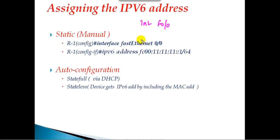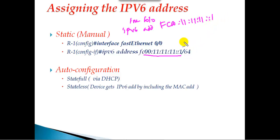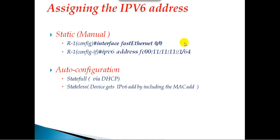To assign the IPv6 address, we go to interface f0/0 and instead of 'ip address' we say 'ipv6 address', followed by the IPv6 address — for example fc00:11:11:11::1. Then we define the subnet mask. In IPv6 we don't use 255.255 notation like IPv4; instead we define the subnet mask as a slash value. The default slash value for IPv6 is /64, meaning the first 64 bits are the global prefix and the remaining 64 bits are the interface ID.